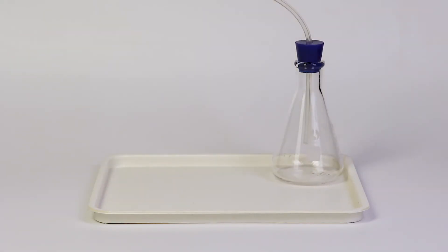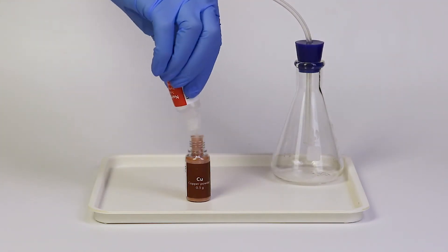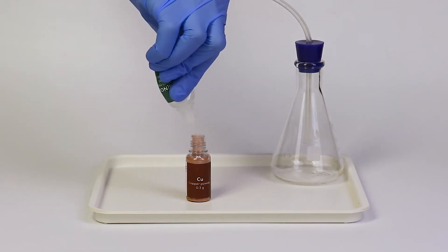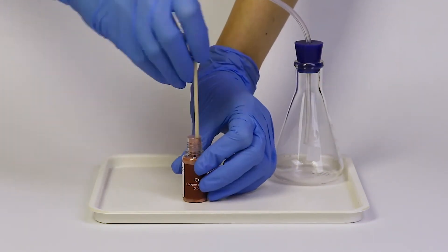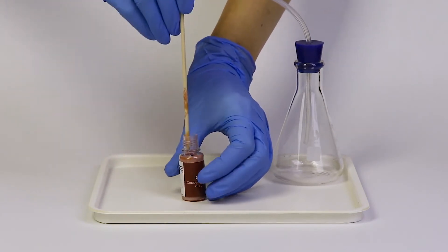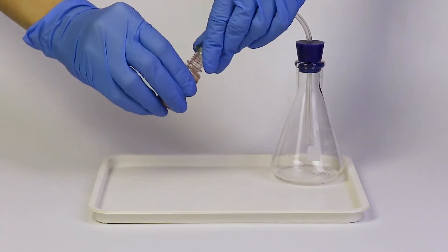Then, take a bottle with copper powder and pour in there a bottle of sodium hydrogen sulfate solution. Add calcium nitrate solution. Stir the obtained mixture with a wooden stick and close the bottle with the nozzle.